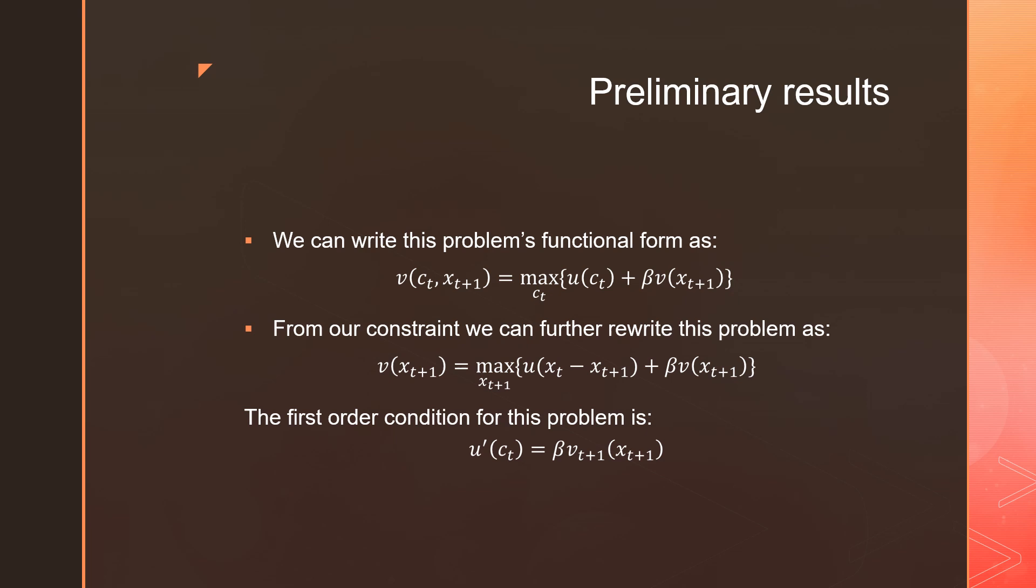This is our value function, which is a function of consumption at time T and the cake size X_{T+1}, which is something we control. It equals the maximization problem of our instantaneous utility as a function of consumption plus beta (which is between 0 and 1, a discounting parameter).